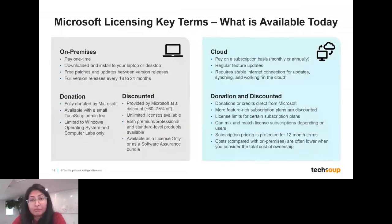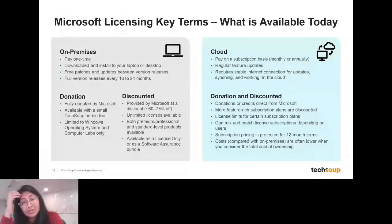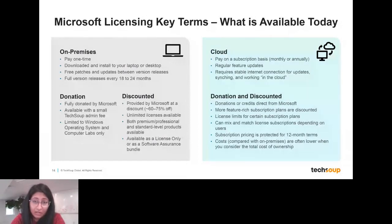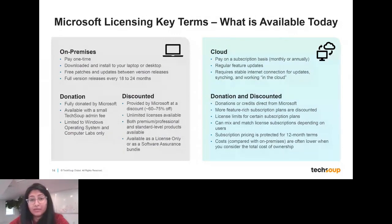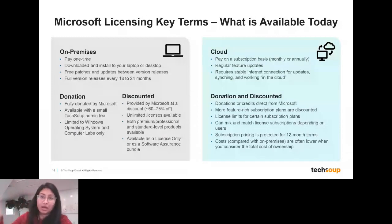There are still discounted on-premises licenses available at about 60 to 75% off commercial pricing. On the cloud side, there are both donated and discounted licenses. Microsoft makes available about two license types as a full donation in the Microsoft 365 umbrella, and then other offers as a donation as well. That 60 to 75% discount rate is also applied to some cloud subscriptions, so many can be pretty affordable, with higher price points at the higher license tiers.